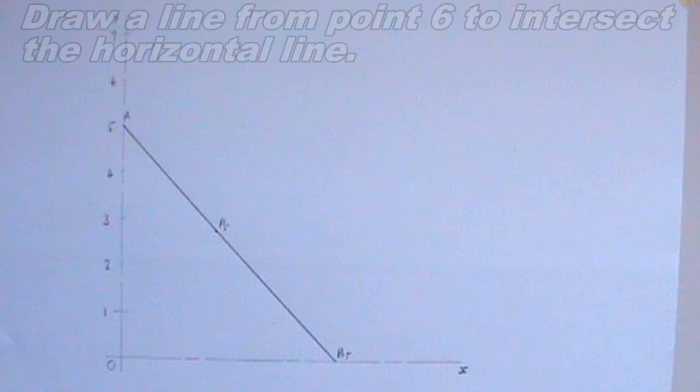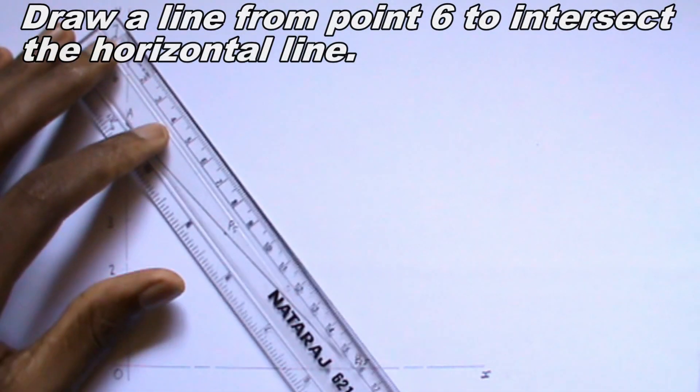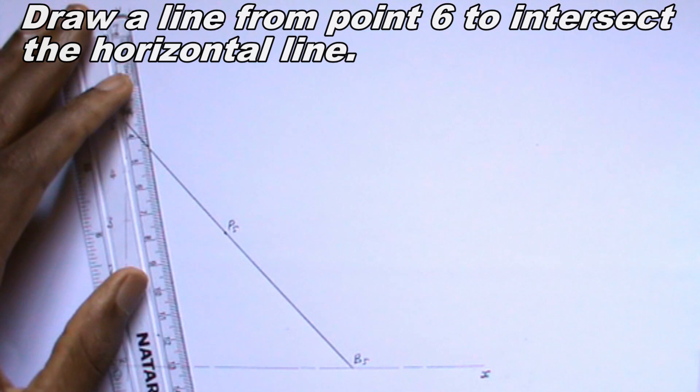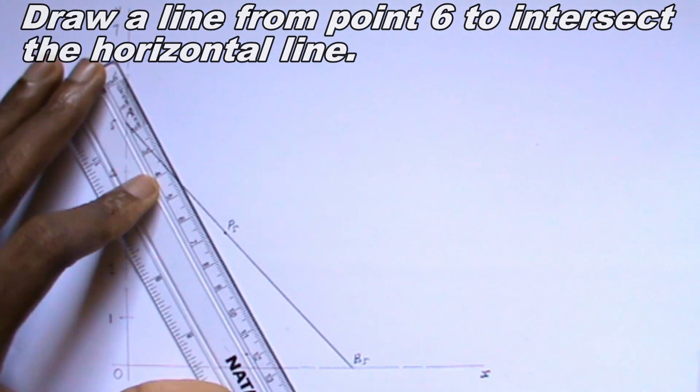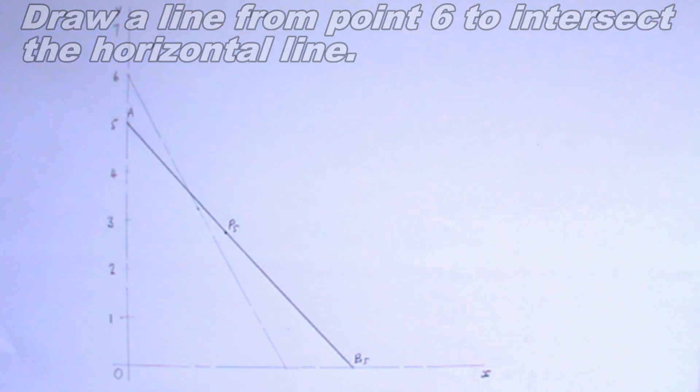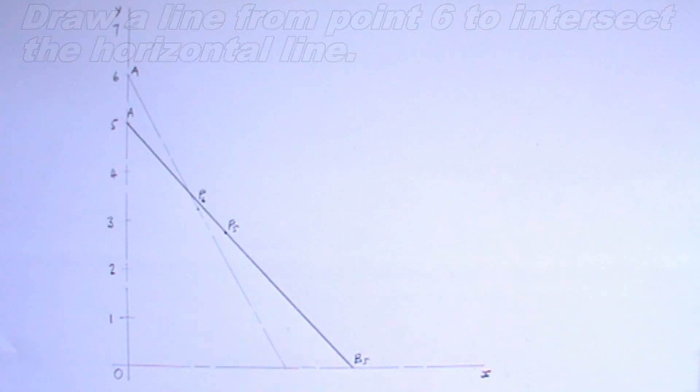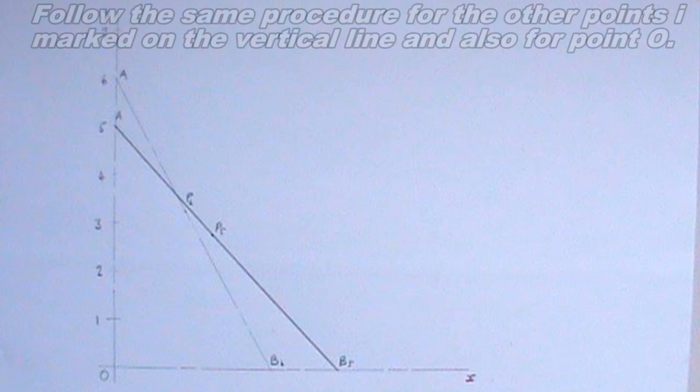I will repeat the same procedure in point 6, but this time I will draw a thin chain line. I will follow the same procedure for the other points I marked on the vertical line and also in point O.